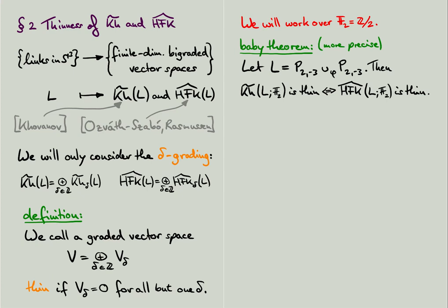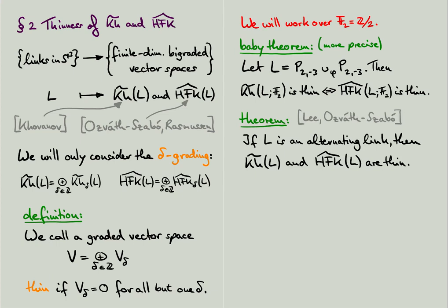What evidence is there that something like this might be true? Well, firstly, the Khovanov and knot-Floer homology of many knots with a small number of crossings are thin. For example, it is known that this is true for alternating links and more generally quasi-alternating links. So there are a large number of links for which the notions of thinness coincide for both homology theories.